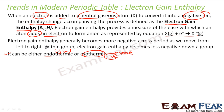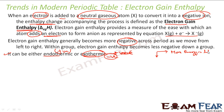Electron gain enthalpy becomes more negative across a period as we move from left to right. Within a group, it becomes less negative. So in the scenario where energy is liberated, more and more energy is liberated as we go from left to right across a period.